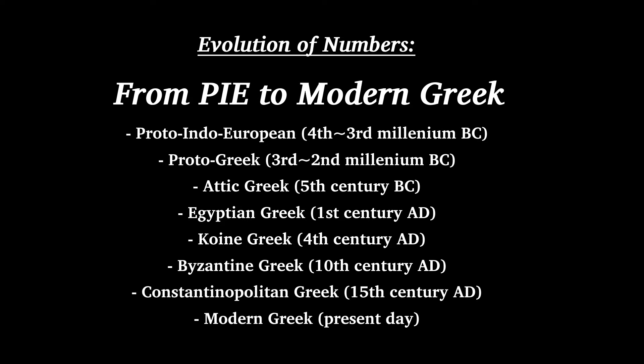Proto-Indo-European, which was probably spoken around the 4th or 3rd millennium BC. Proto-Greek, which was probably spoken around the 3rd or the 2nd millennium BC. Attic Greek, which was spoken in the 5th century BC. Egyptian Greek, as it was spoken in the 1st century AD. Koine Greek, as it was spoken in the 4th century AD. Byzantine Greek, as it was spoken around the 10th century AD. Constantinopolitan Greek, as it was spoken around the 15th century AD. And finally, Modern Greek, as it is spoken today.